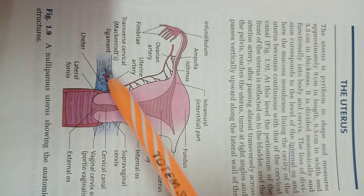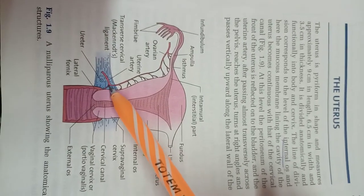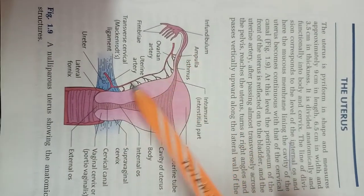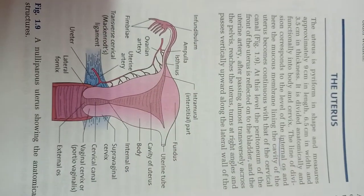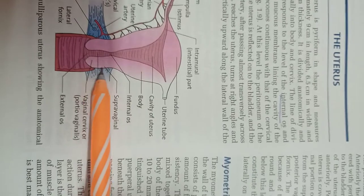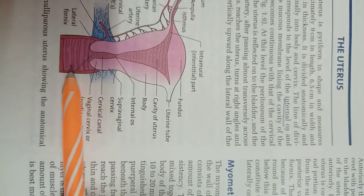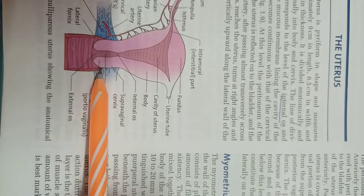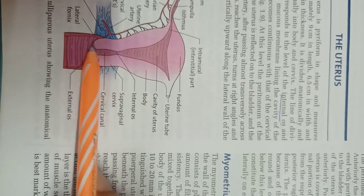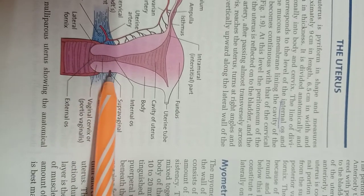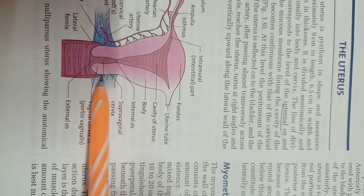The transversely arranged uterine artery, at the level of the internal os, turns at a right angle upwards and then supplies the uterus and fallopian tube parts. The cervix has two parts: the supravaginal part lies above the vagina, and the vaginal part of the cervix lies within the vagina.